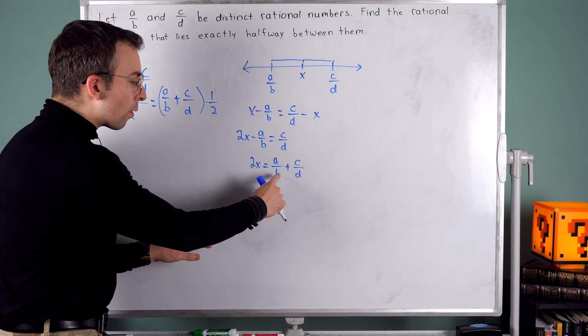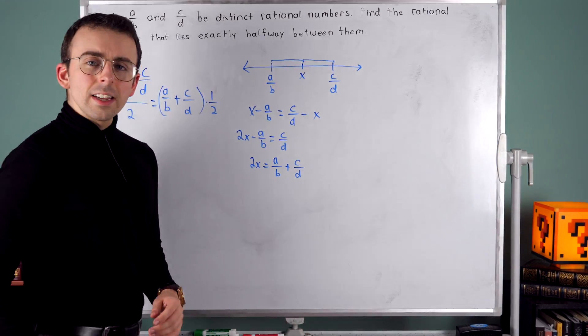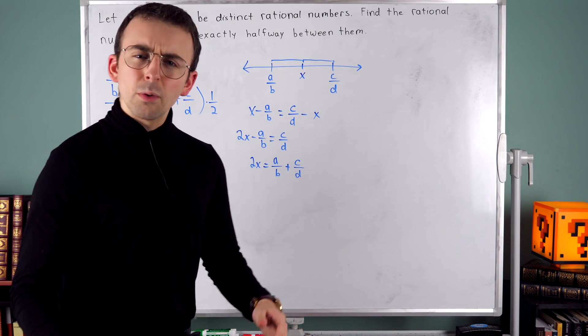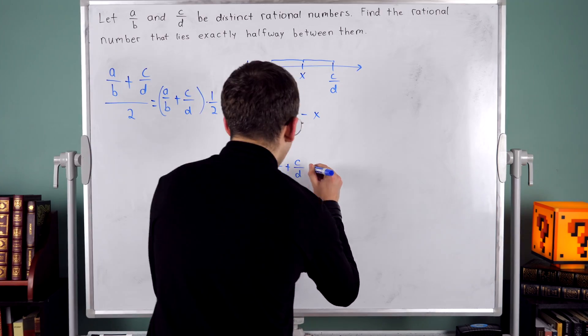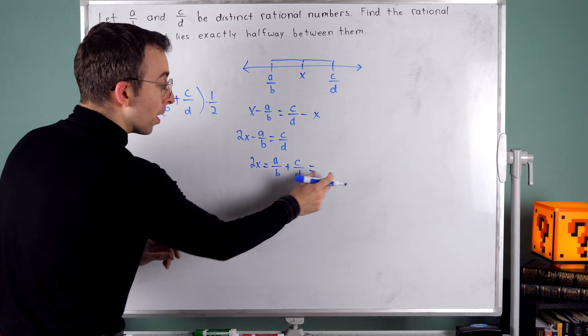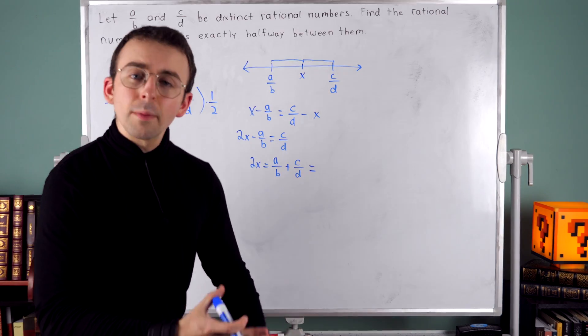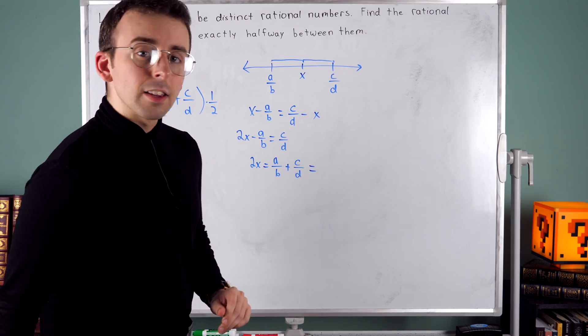To combine A over B and C over D, we're going to have to give them common denominators. But how do we do that? Well, let's start working through it. I'm going to write an expression that this is equal to, trying to make some progress towards combining the fractions.